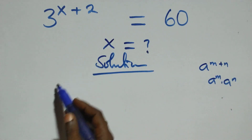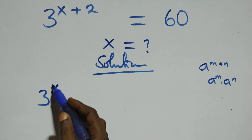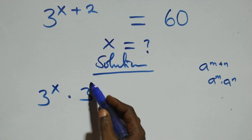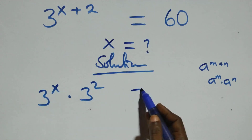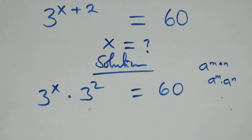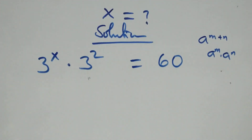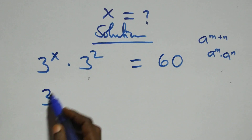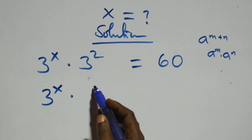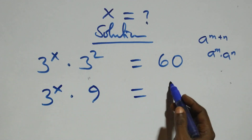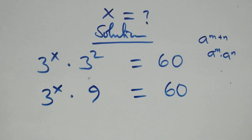At this point, this becomes three to the power x times three squared equals sixty on this side. The next step is three raised to the power x times three squared — three times three is nine — equals sixty.